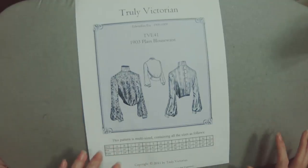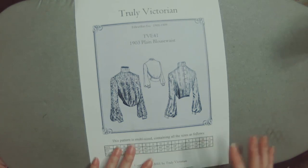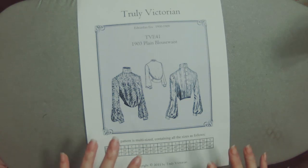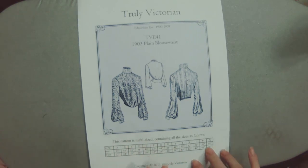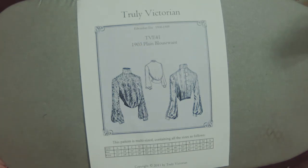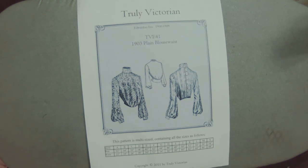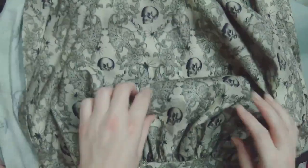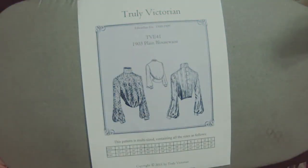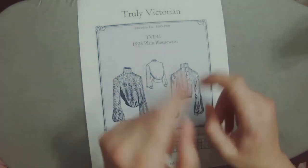Hello friends! So, in this video I'm going to be working on the Truly Victorian TVE 41 1903 plain blouse waist, which I had started in this absolutely wonderful skulls and lace fabric. But as you can see, it has no floop, so it ended up being a mock-up. And that's okay. But you know what? It turns out it fit, and that is good.